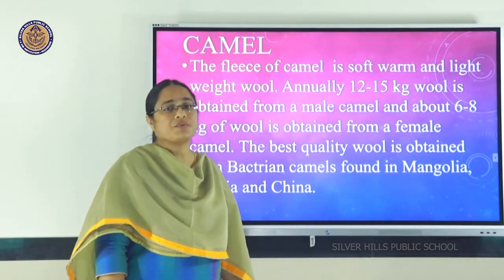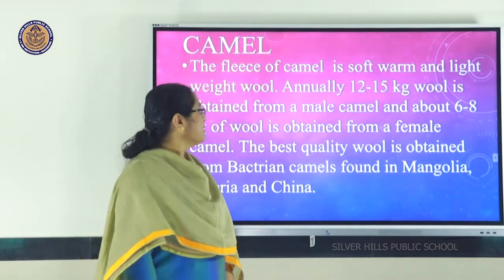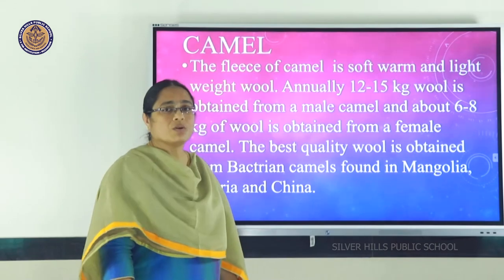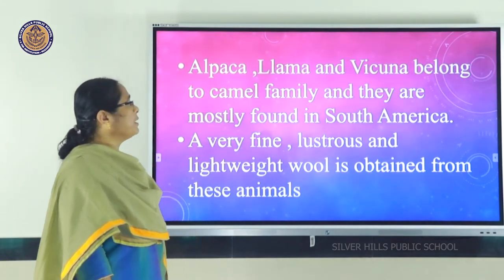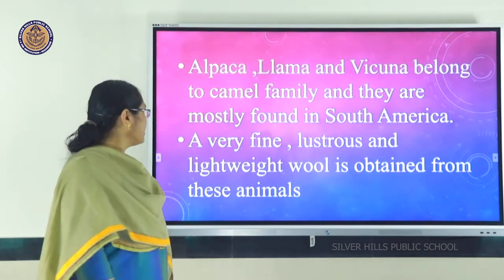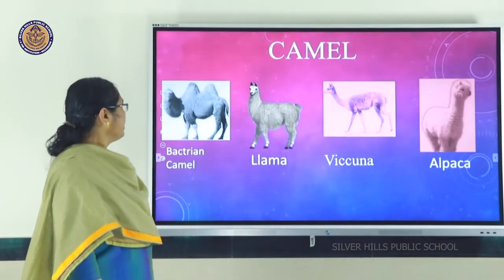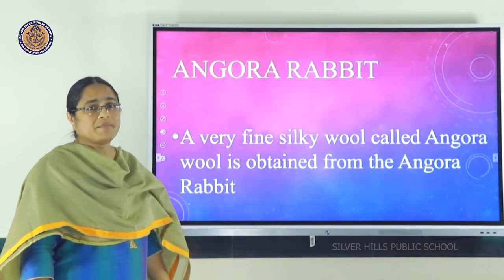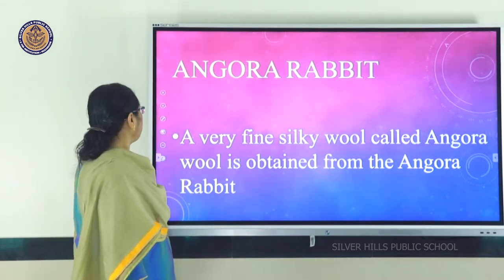Besides goats, we get wool from camels. Annually we get almost 12 to 15 kilograms of wool from a male camel and 6 to 8 kilograms from a female camel. Best quality wool comes from Bactrian camels found in Mongolia, Siberia, and China. Alpaca, Llama, and Vicuna belong to the camel family and are mostly found in South America, giving very fine, lustrous, and lightweight wool. Besides all these, a very fine silky wool called Angora wool is obtained from the Angora rabbit.